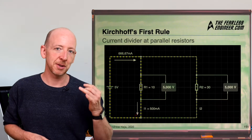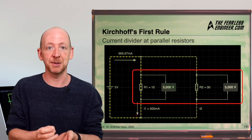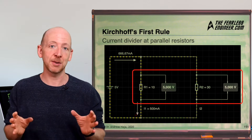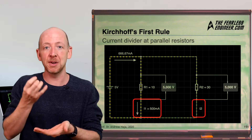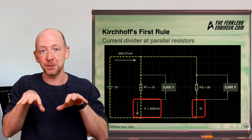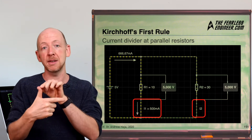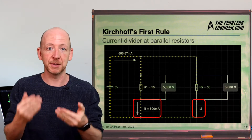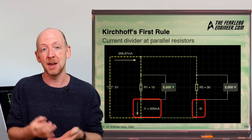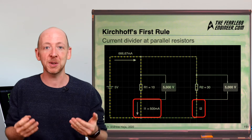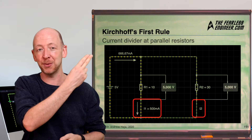In the last video on Kirchhoff's first law we looked at how to combine resistors connected in parallel using both the node rule and Ohm's law. Now we want to calculate the partial currents running through the individual branches of a network, using Ohm's law and the voltage equality rule which holds for parallel resistors. If you're not sure why the voltage drop across parallel components is identical, you should watch my last video on this topic which contains both a theoretical explanation and an experiment.